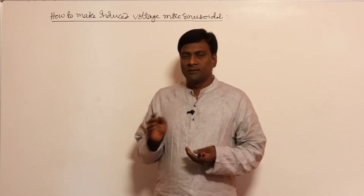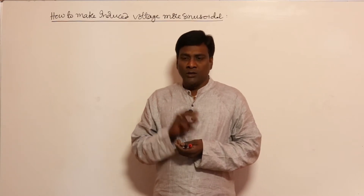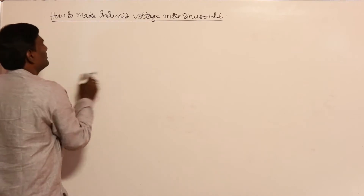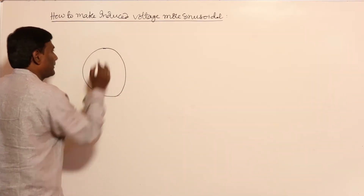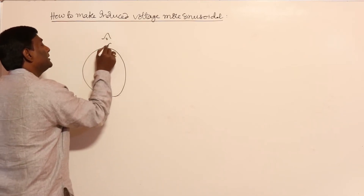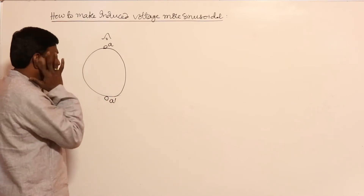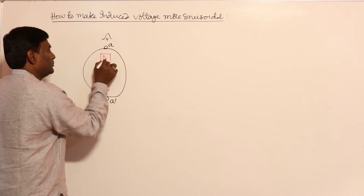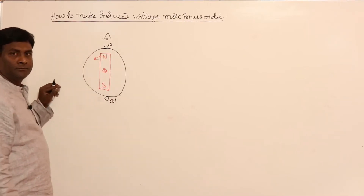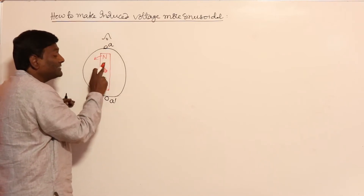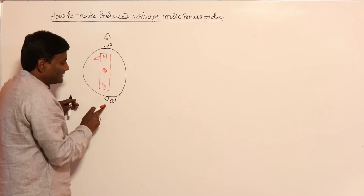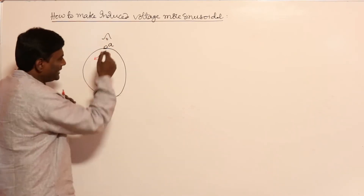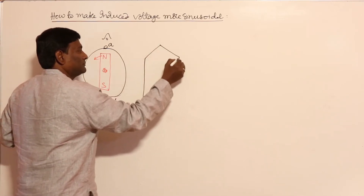To make induced voltage more sinusoidal, we can use short-pitched coils to reduce harmonics. For example, consider a stator with a two-pole machine. If conductor A is under the flux density maximum of the N pole, and A-dash is under the flux density maximum of the S pole, then if positive maximum is induced at A, negative maximum will be induced at A-dash.